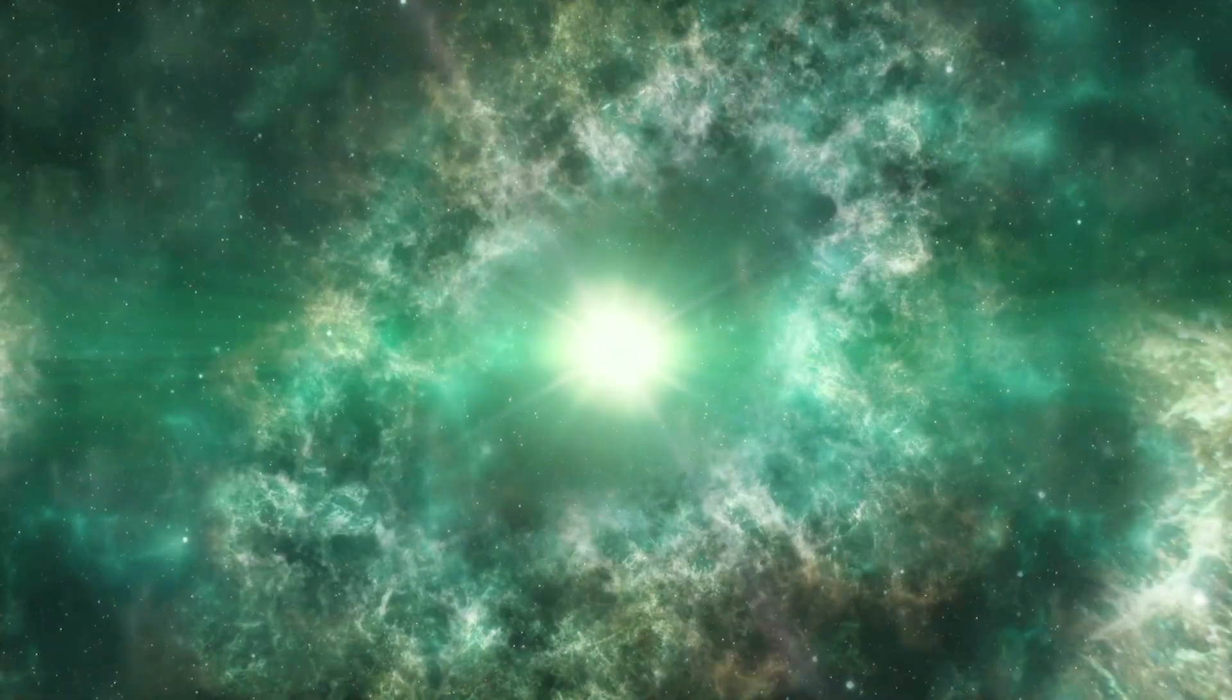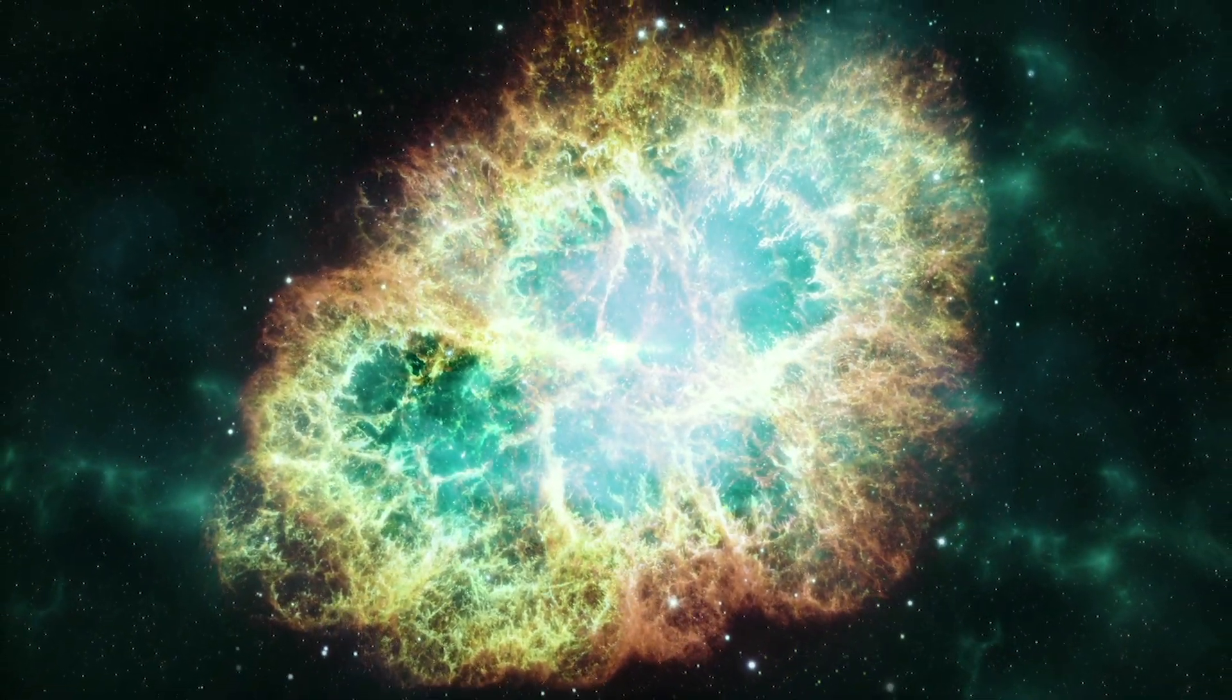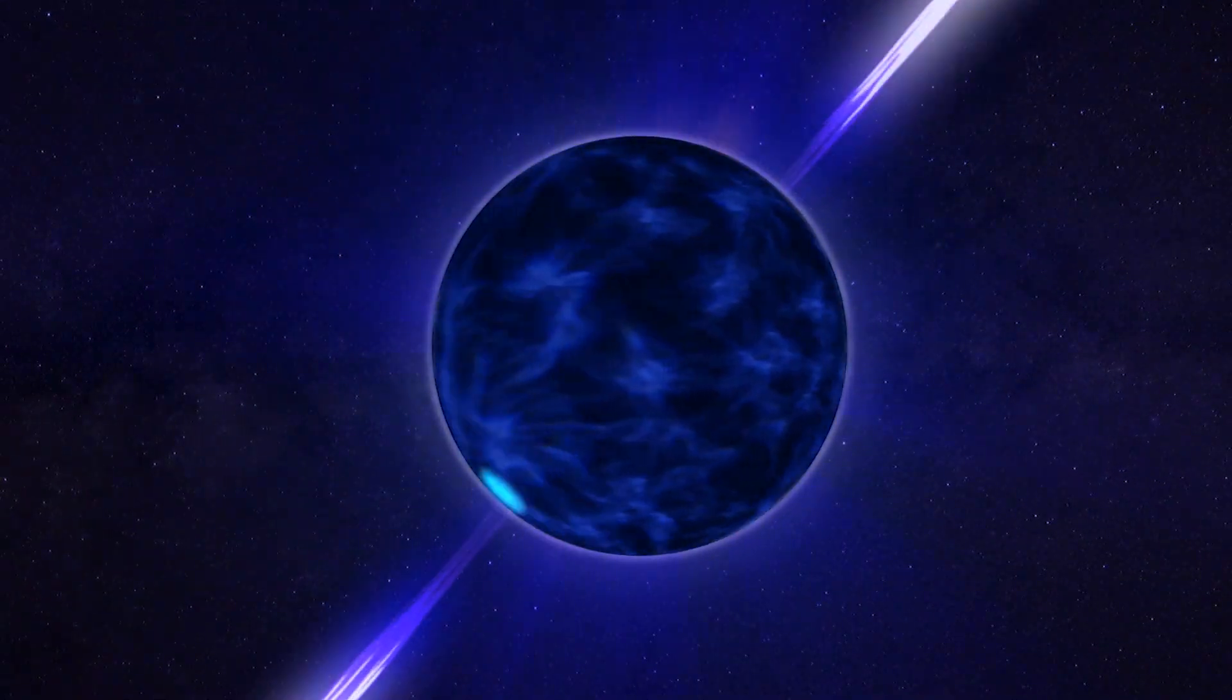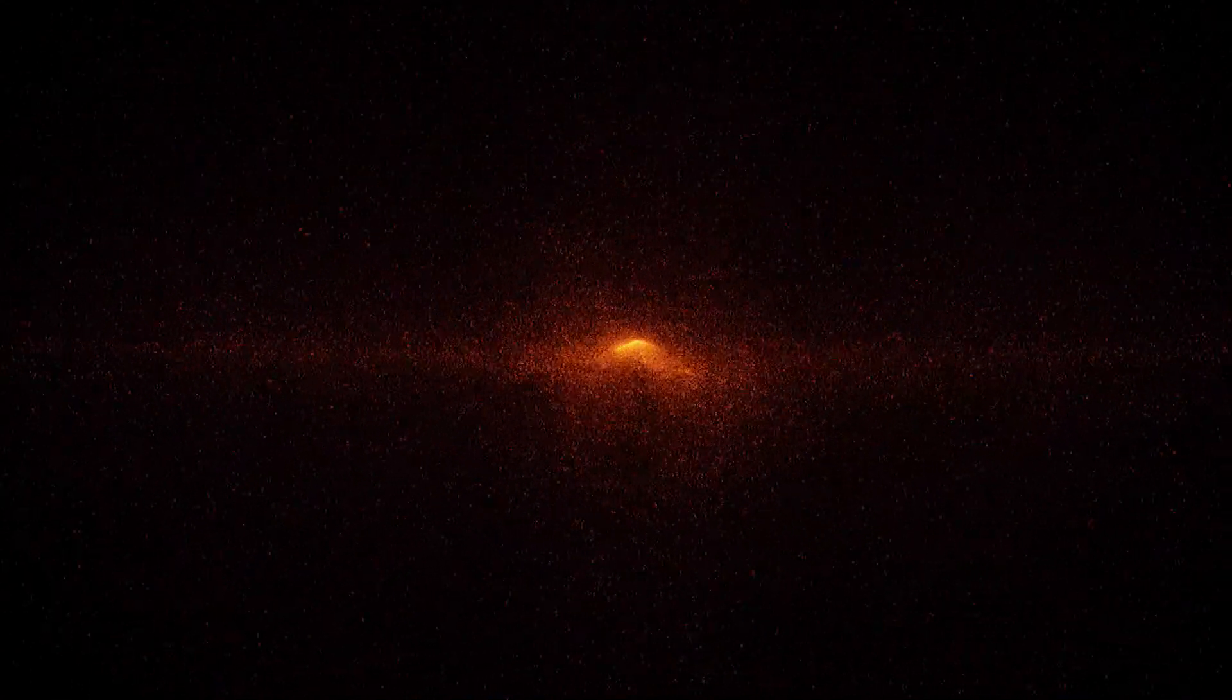When a massive star explodes, not all the material is ejected into space. Some of it collapses into an extremely dense object known as a neutron star, inside which gravitational forces crush protons and electrons together, turning them into particles known as neutrons.